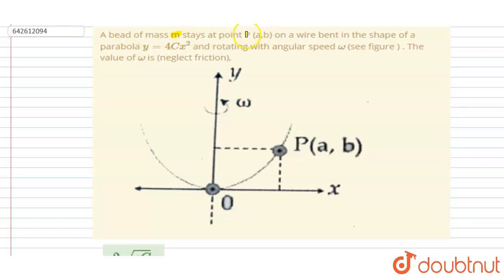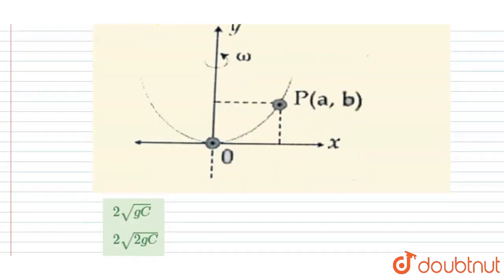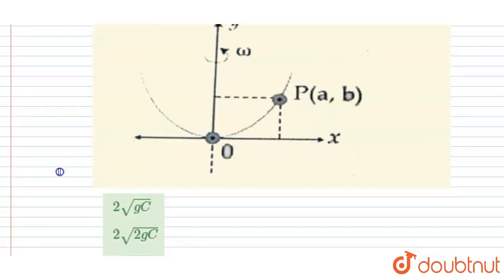A bead of mass m stays at point P on a wire bent in the form of a parabola, rotating with an angular speed omega. We have to find the value of omega. Looking at the diagram, the particle rotates along this parabola, so it will be acted upon by a centrifugal force when viewed from the rotating frame of the parabola.